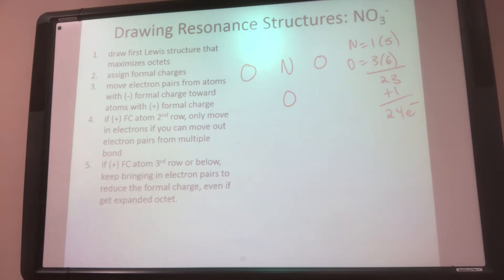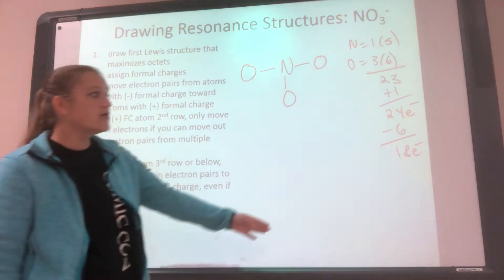All right, next step, single bonds. Everybody gets bonded. How many bonds? 3. There's 2 electrons in a bond, so that's 6 electrons. So that means I only have 18 left. Keep track of your electrons as you go.